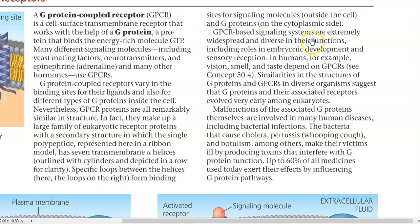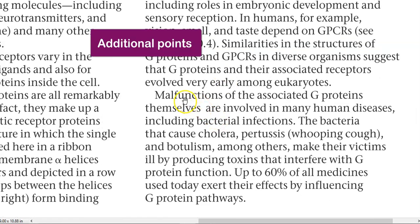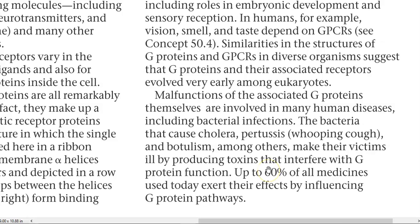G-protein coupled receptor signaling systems are widespread and diverse in their functions, including embryonic development and sensory reception. In humans, vision, smell, and taste all depend on GPCRs. Malfunctions in G-proteins themselves may lead to several human diseases, including bacterial infections. Bacteria causing cholera, pertussis (whooping cough), and botulism produce toxins that interfere with G-protein function. More than 60% of medicines commonly available on the market exert their effects by influencing G-protein pathways.